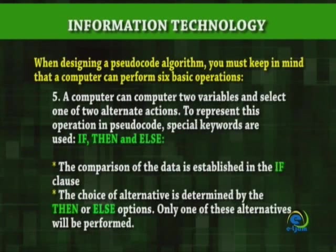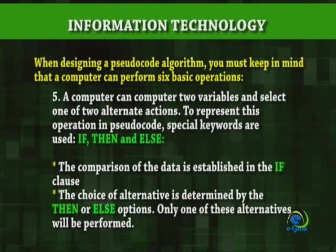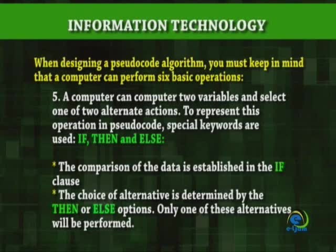Operation 5: A computer can compare two variables and select one of two alternate actions. To represent this operation in pseudocode, special keywords are used: if, then, and else. The comparison of the data is established in the if clause. The choice of alternative is determined by the then or else options. Only one of these alternatives will be performed.